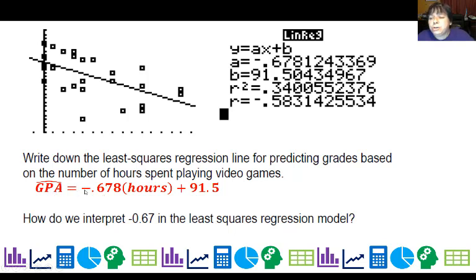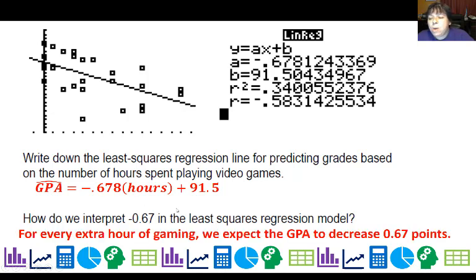Now, how do we interpret this negative 0.67? Really, I have 0.67, it's really negative 0.68. Well, for every extra hour of gaming, we expect the GPA to decrease about 0.67, 0.68 points. So this is the marginal change. Remember, we kind of went over that already. The slope is the marginal change, and it lets us know how much something changes.